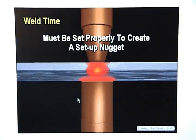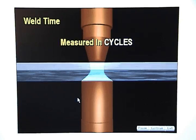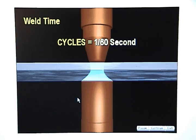Weld time must be set properly to create a setup nugget. Weld time is how long current flows through the weld area. It is measured in cycles which are equal to one-sixtieth of a second.